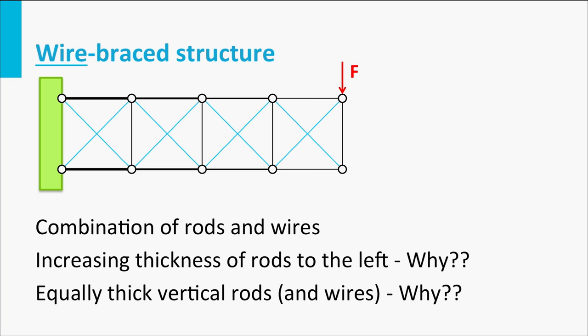The vertical force is transferred by some of the wires and some of the vertical bars. The vertical force also induces a bending moment and this moment is carried by the upper and lower horizontal bars. The upper horizontal bars are in tension. The lower horizontal bars are in compression.